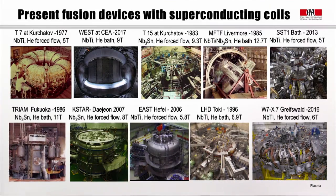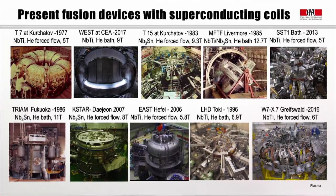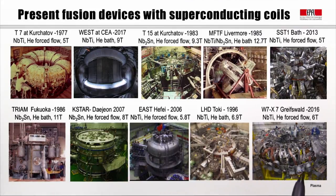Several fusion devices already employ superconducting coils. Starting from T-7, built in 1977 at Kurchatov in Russia going up to 5 T with NbTi coils, to the most recent WEST facility at CEA in France — a new version of Tore Supra — using NbTi going up to 9 T — as well as EAST in China, K-STAR in Korea, and the W7-X superconducting stellarator going up to 6 T using NbTi with forced-flow helium.